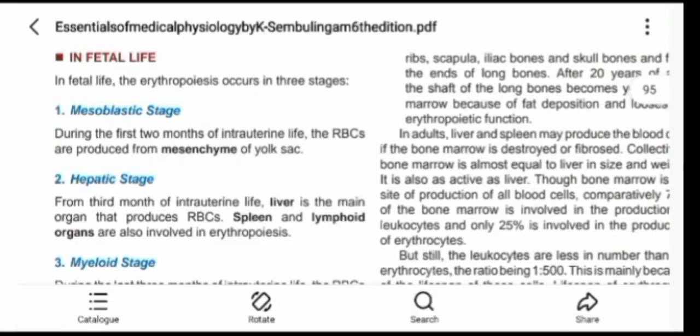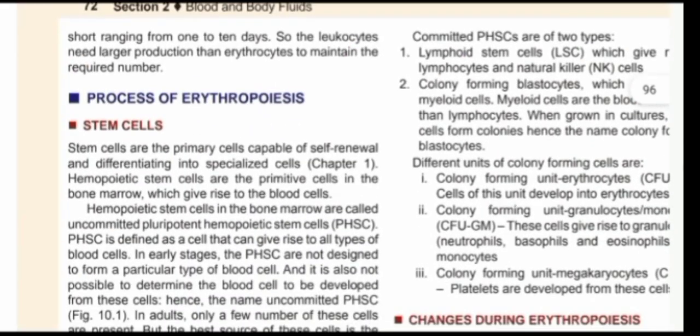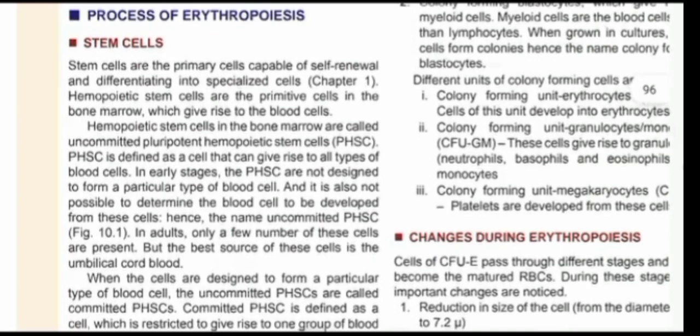In newborn babies, for the process of erythropoiesis, you have to know the stem cells. Stem cells are the primary cells capable of self-renewal and differentiating into specialized blood cells. The one of interest is the hemopoietic stem cell, which is present in the bone marrow. They are called the uncommitted, polypotent hemopoietic stem cells, or hemocytoblasts. These cells are uncommitted, meaning they can give rise to various blood cells, not just a specific type.